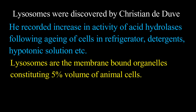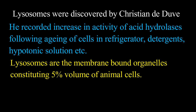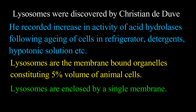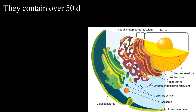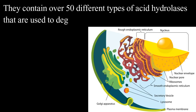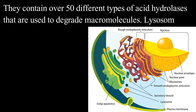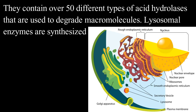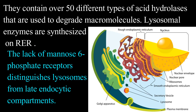Lysosomes are the membrane-bound organelles constituting 5% volume of animal cells. Lysosomes are enclosed by a single membrane. They contain over 50 different acid hydrolases that are used to degrade macromolecules. Lysosomal enzymes are synthesized on rough endoplasmic reticulum. The lack of mannose-6-phosphate receptors distinguishes lysosomes from late endocytic compartments.